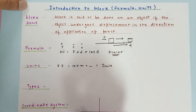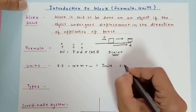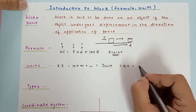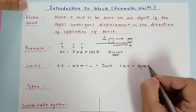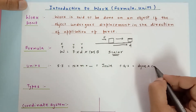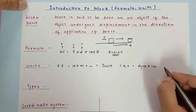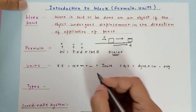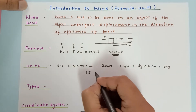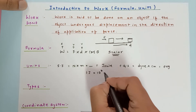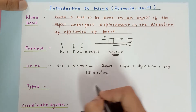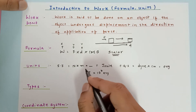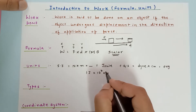The CGS unit of force is dyne, the CGS unit of displacement is centimeter. The CGS unit of work done is called erg. One Joule is equal to 10⁷ erg. I have already derived this and the link for the conversion will be in the description.